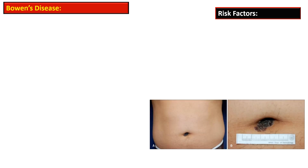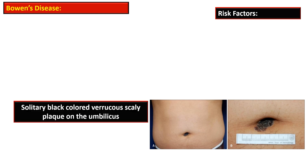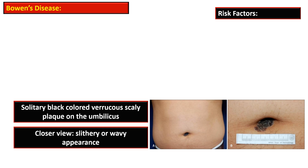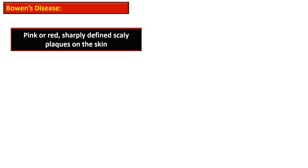This photograph shows the gross appearance of Bowen's disease. There is a solitary, dark-colored, scaly plaque on the umbilicus that on closer view is serpiginous or wavy in appearance. The lesion is pink or red, sharply defined, and presents as a scaly plaque.